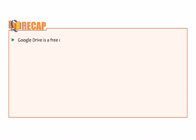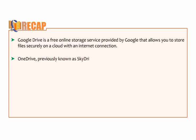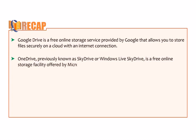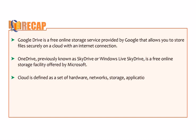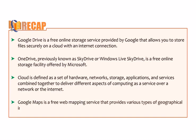Let us take a recap. Google Drive is a free online storage service provided by Google that allows you to store files securely on a cloud with an internet connection. OneDrive, previously known as SkyDrive or Windows Live SkyDrive, is a free online storage facility offered by Microsoft. Cloud is defined as a set of hardware, networks, storage, applications and services combined together to deliver different aspects of computing as a service over a network or the internet. Google Maps is a free web mapping service that provides various types of geographical information.